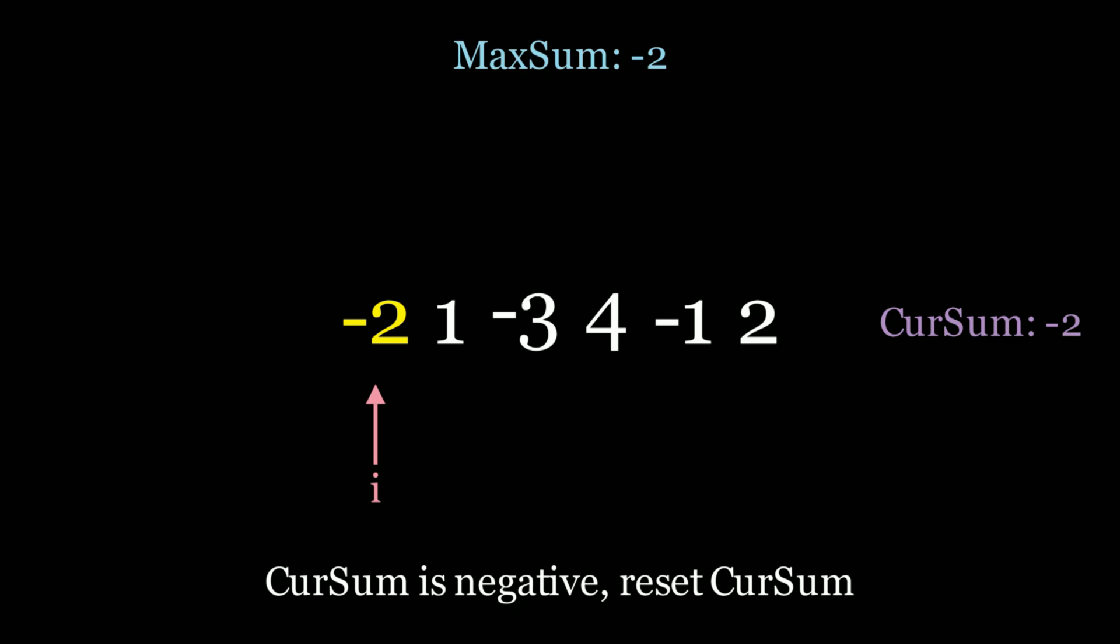Our current sum is negative 2, which is a negative number. We're interested in the maximum sum for a subarray in this array. If we know that we're a net negative, does it make sense to carry this negative with us? No, it actually doesn't, right?